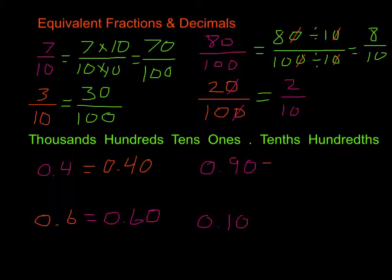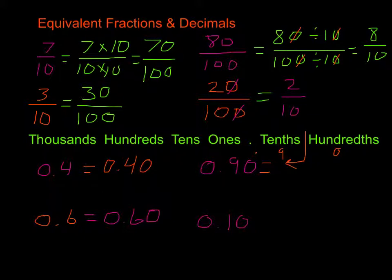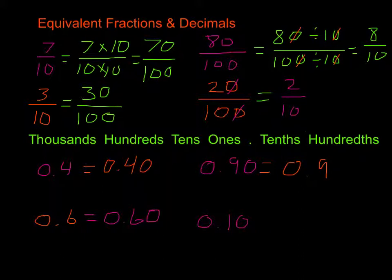On this next one we have 0.90, and this time we are going to make it tenths — we only want to show tenths. How many tenths is 0.90? If we put it in our chart, we'd have our decimal point, our 9, and our 0. We're only looking at the tenths position, so we have 0.9 — 9 tenths. We're just dropping the trailing zero because we're dividing out the 10, taking away a zero.